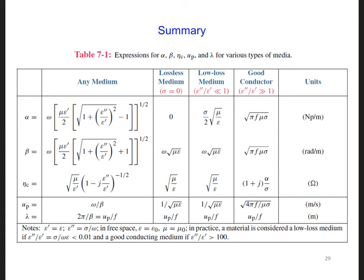Save yourself time and effort and use the lossless, low loss, and good conductor columns whenever you can classify a material as being one of those. By the way, there is nothing particularly special about this threshold of 0.01 for low loss media and 100 for good conductors. It probably is better to choose thresholds depending on the application that we're dealing with, but these are generally good benchmarks.